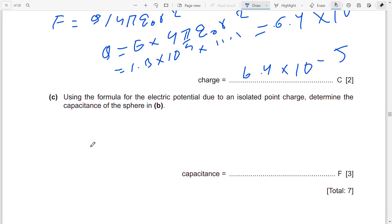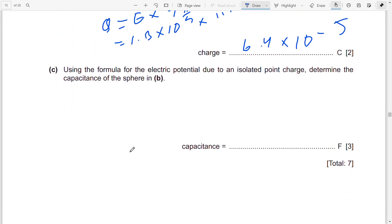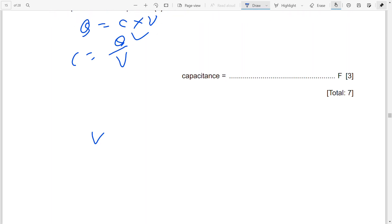Using the formula for the electric potential due to an isolated charge, determine the capacitance of the sphere. First thing you remember: Q = CV. So capacitance C = Q/V. You already have Q, so you need to find V. For V, you know V = Q/(4πε₀r).